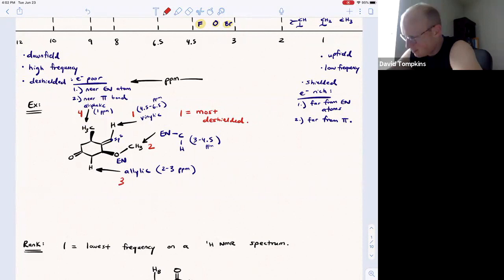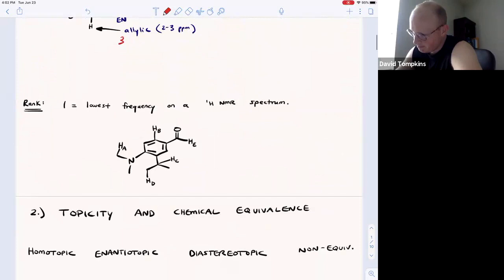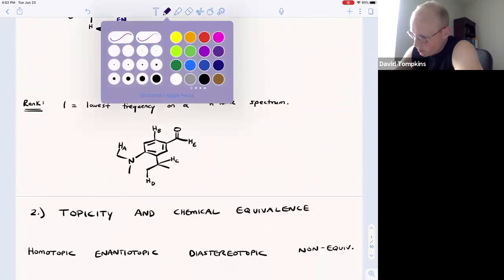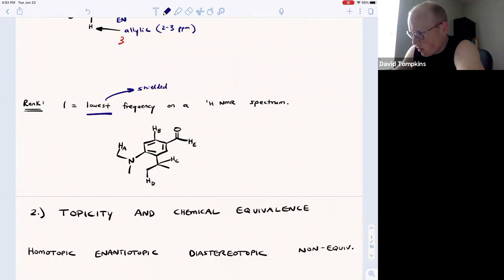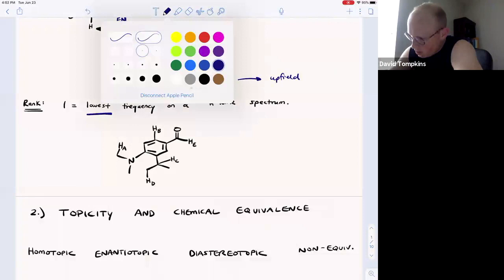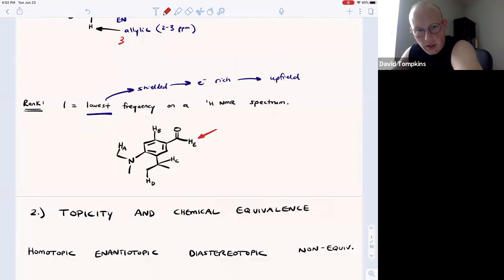One more example problem. Here, number one is going to be the proton with the lowest frequency. Remember that low frequency means the most shielded, or that which is most electron rich, which produces the most upfield chemical shift. The proton of an aldehyde, this is generally around 9 or 10, because it is near an electronegative atom, it is on an sp2 carbon, and of course near a pi system that experiences anisotropy.